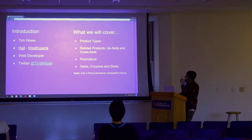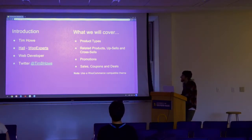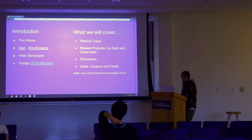We're going to cover these topics: product types, related products, upsells, cross-sells, ways to promote on your site, and the sales and coupon deal. Just a quick note — this is all going to be stuff available in WooCommerce core, but it is very helpful to also have a theme that is WooCommerce compatible to make sure all these items work.